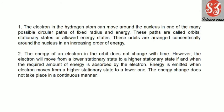The first postulate: the electron in a hydrogen atom can move around the nucleus in one of many possible circular paths of fixed radius and energy. The electron is present in a fixed circular path with fixed radius and fixed energy. This circular path is called orbits, stationary states, or allowed energy states — you can use any of these three terms. These orbits are arranged concentrically around the nucleus in increasing order of energy.